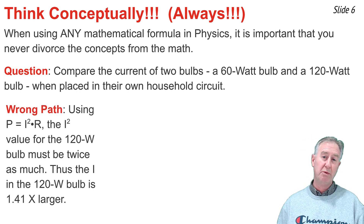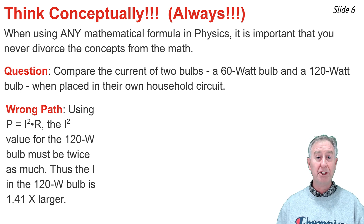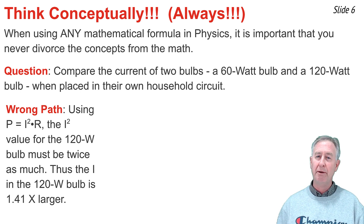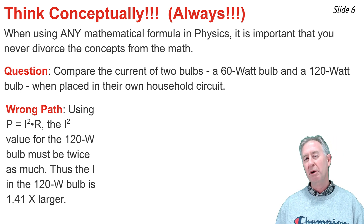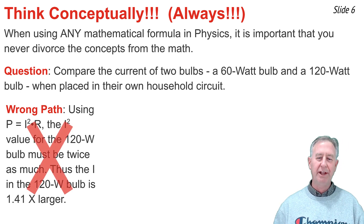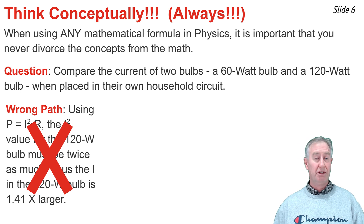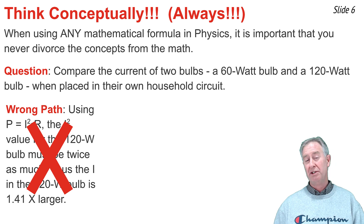The wrong path through this problem goes something like this: P equal I squared times R, so the I squared of the 120-watt bulb must be two times bigger than the I squared of the 60-watt bulb, and therefore the I of the 120-watt bulb must be the square root of two bigger than the I of the 60-watt bulb. No — that's not the way to do it. What's wrong with that path is it presumes that the resistance of the 120-watt bulb is the same as the resistance of the 60-watt bulb, and it isn't.